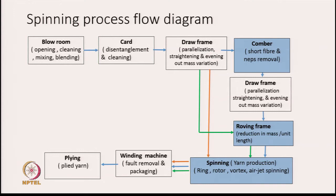We disentangle the fibers because fibers are fed to the carding machine in the form of small tufts, so we want to separate the fibers completely. What we produce from this machine is basically a sliver, which is an array of fibers. From the carding machine, the slivers are sent to the draw frame. The process is known as the drawing process, where we parallelize and straighten the fibers and even out the mass variations.